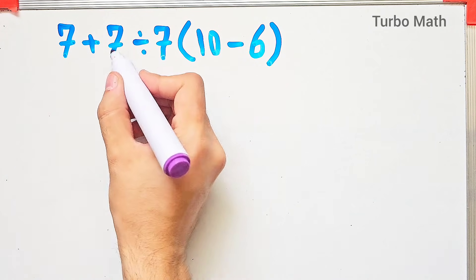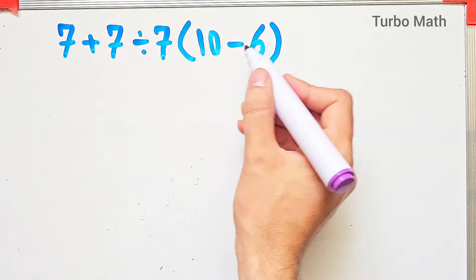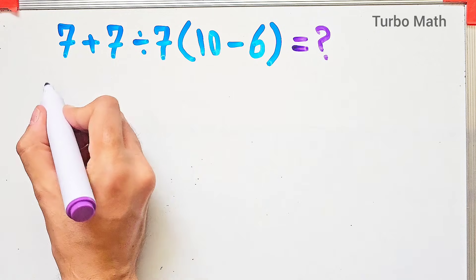7 plus 7 divided by 7 then times 10 minus 6. What is the answer of this question? Can you solve it?